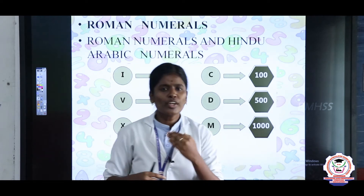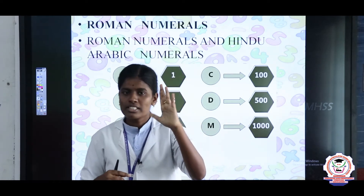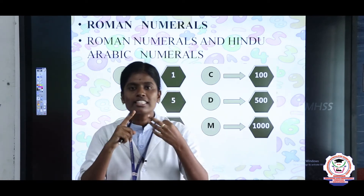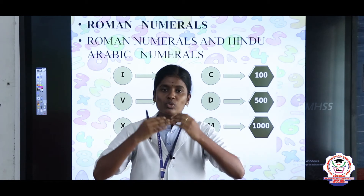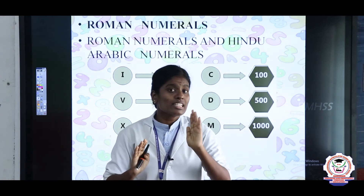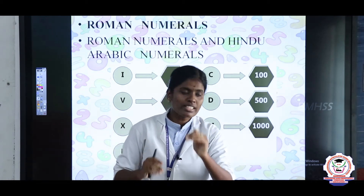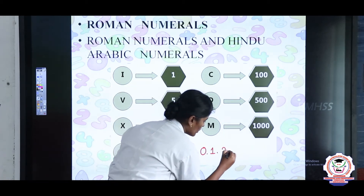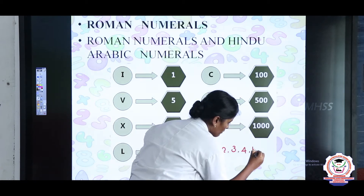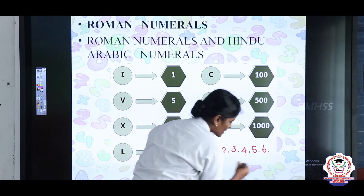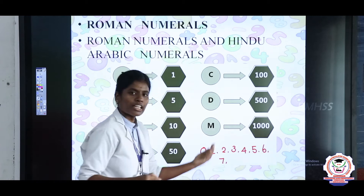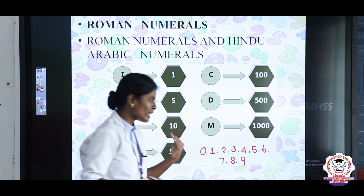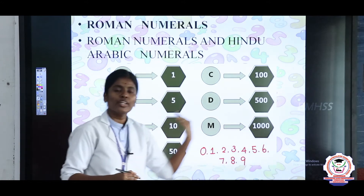Listen, my children. In Hindu-Arabic numerals, we use only 10 symbols — 0, 1, 2, 3, 4, 5, 6, 7, 8, 9 — to represent all the numbers. We use these 10 symbols to write all the Hindu-Arabic numerals.